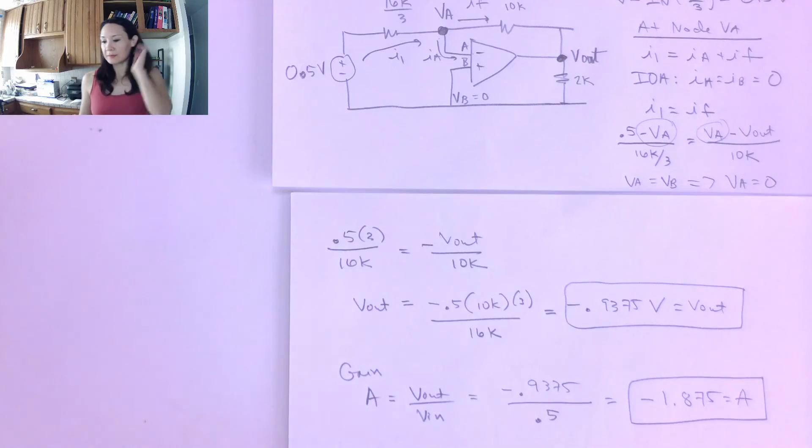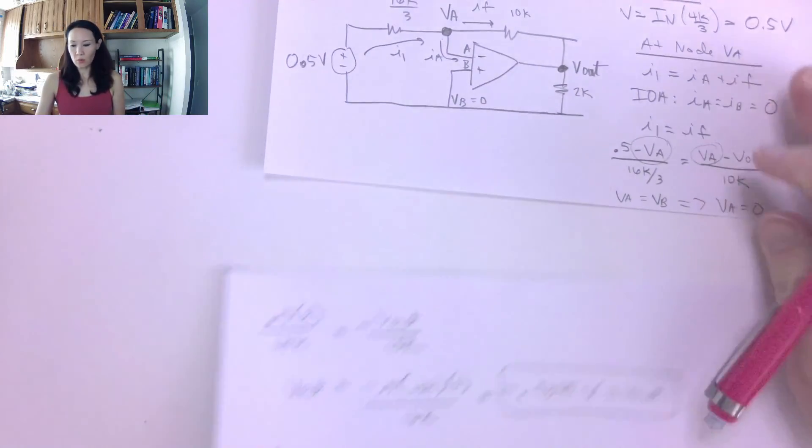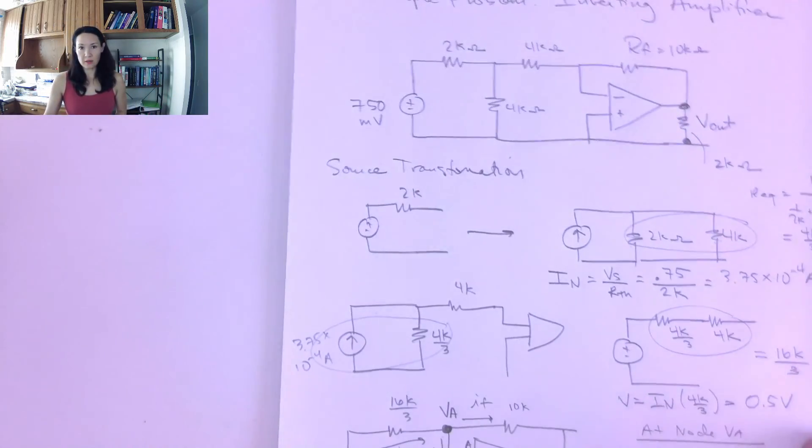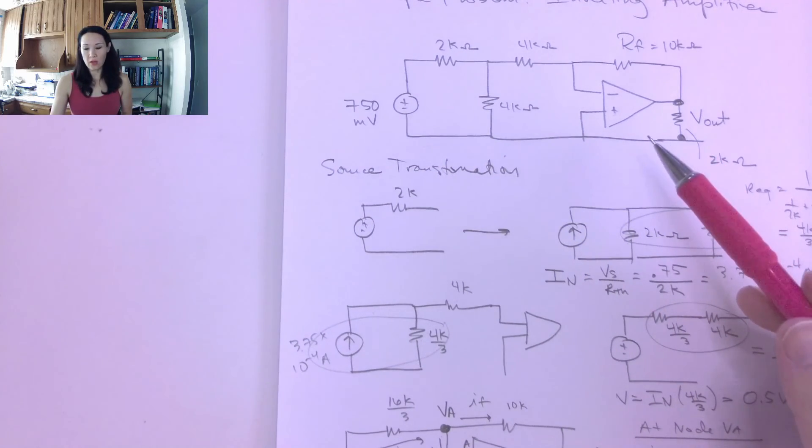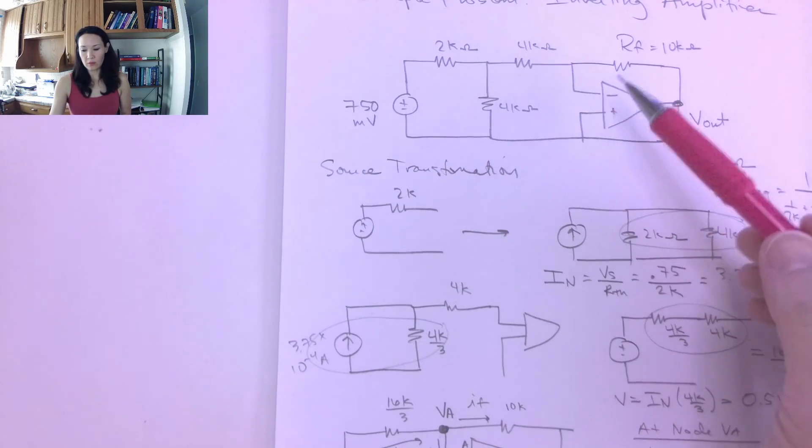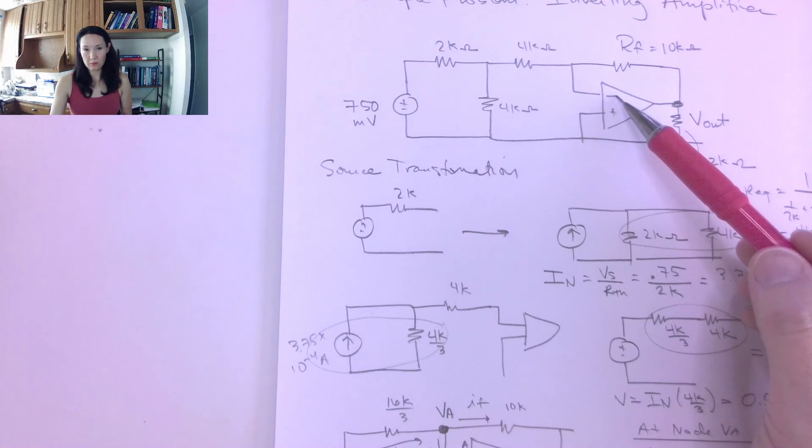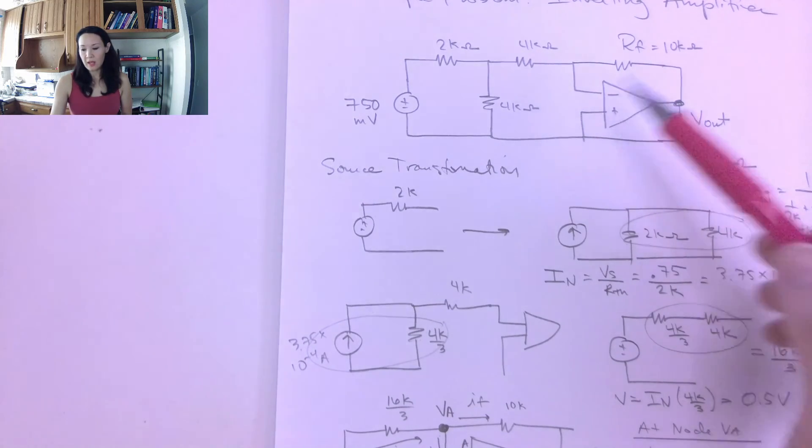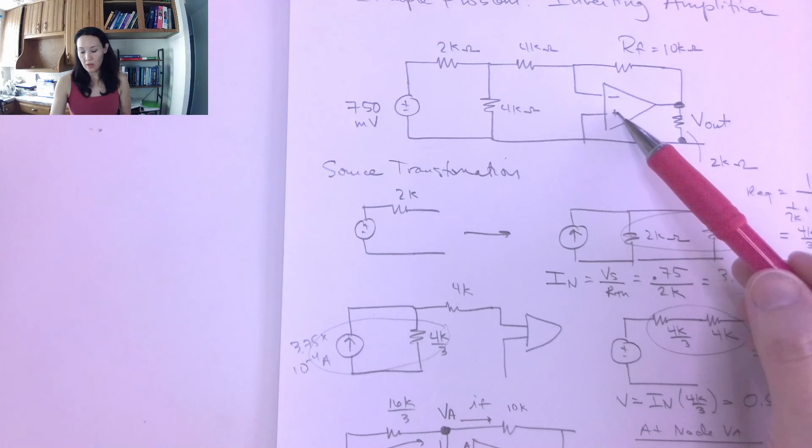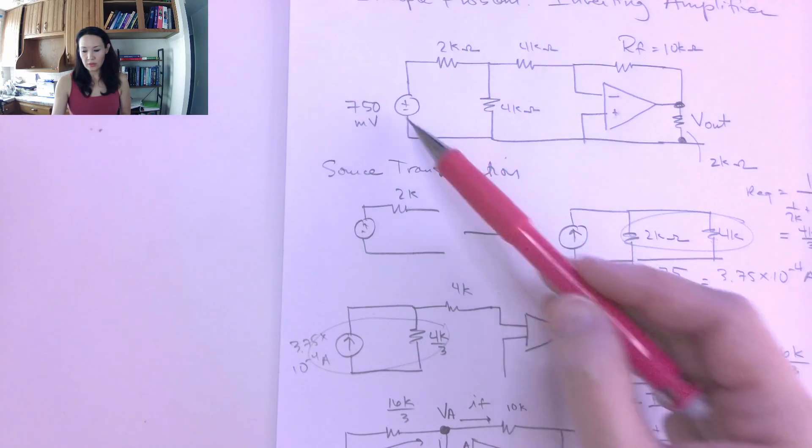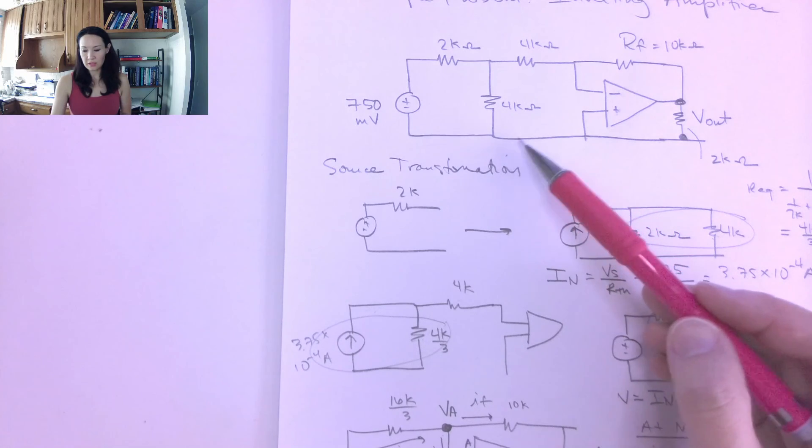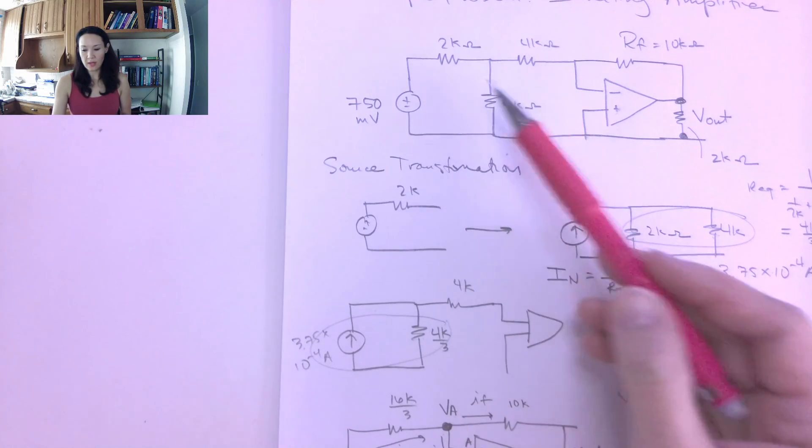Okay, great, so the process here was, given a circuit that looks like this, first you identify whether it's inverting or non-inverting. Inverting, if the voltage input goes into the inverting input, and the non-inverting input here is tied to ground.